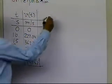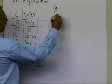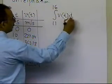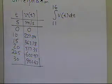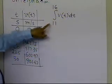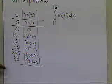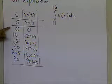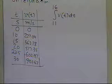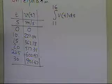Now suppose you're asked to find the distance covered by this rocket from t=11 seconds to t=16 seconds. To do that, you're going to integrate the velocity expression from 11 to 16. However, we're not given a velocity expression — we are only given velocity at discrete data points, in this case six data points.